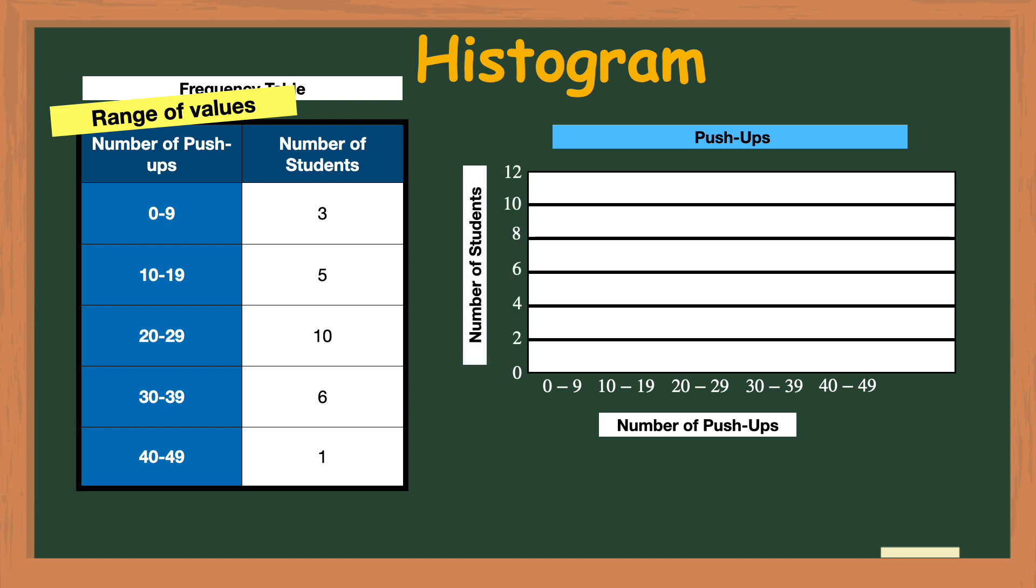Next we will plot the data from the frequency table onto the histogram. We will start by looking at the first row in the table. Three students completed between zero to nine push-ups so we'll use a blue bar like this to represent this data point. Moving down to the second row we'll use an orange bar to represent the five students who completed between 10 and 19 push-ups.